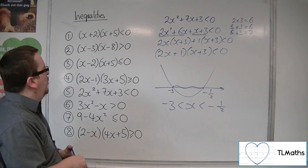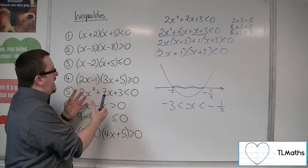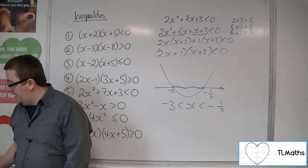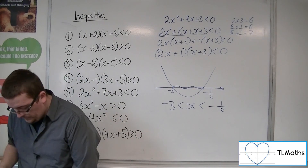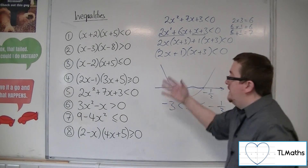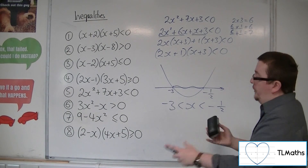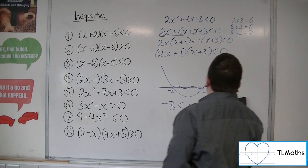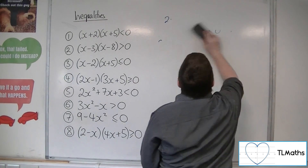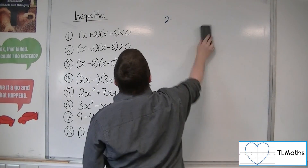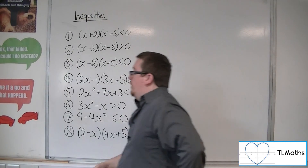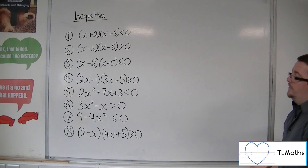It's all about getting everything onto one side of the inequality to get that 0, which I've conveniently done for all of these to start off with, and then solving the quadratic to identify where the parabola is crossing the x-axis.